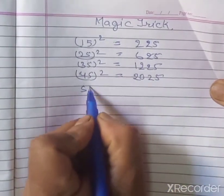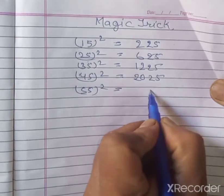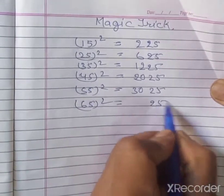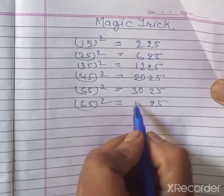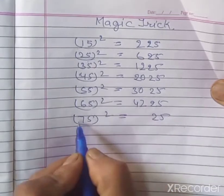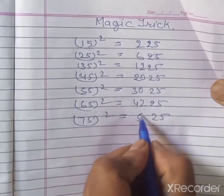For 55 squared, we write 25 and 5 times 6 equals 30, giving 3025. For 65 squared, we write 25 and 6 times 7 equals 42, giving 4225. For 75 squared, we write 25 and 7 times 8 equals 56, giving 5625.